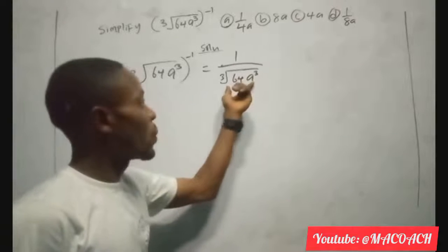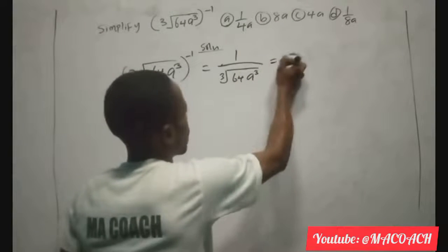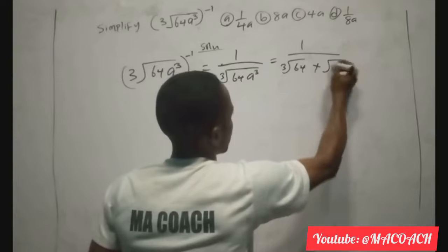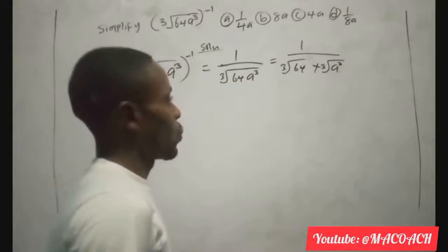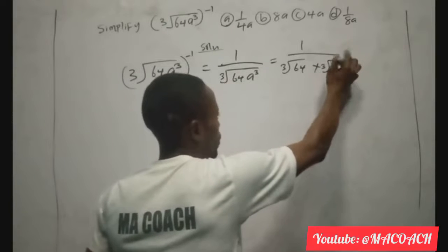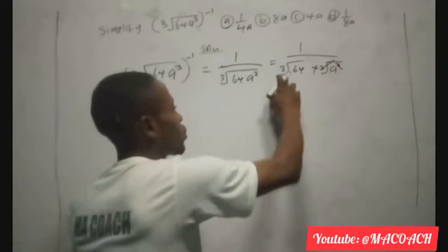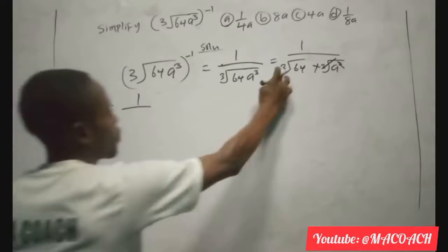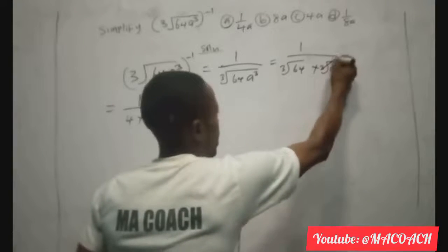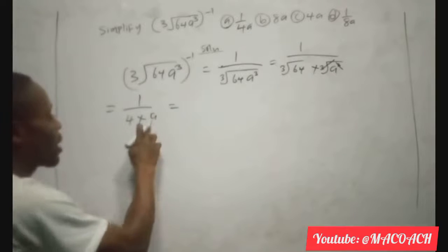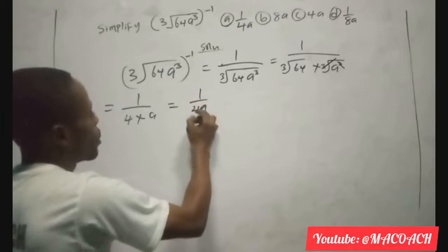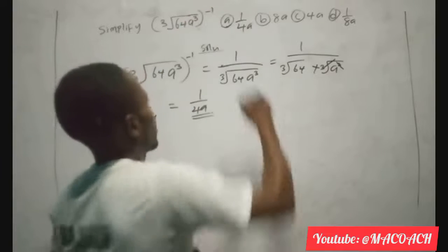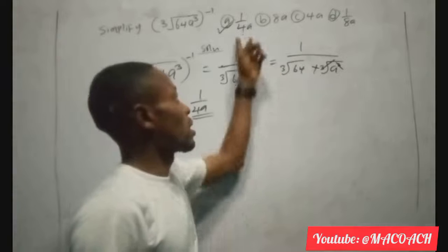Expanding what we have inside: 1 over the fourth root of 64, multiplied by the fourth root of A cubed. The fourth root and the power of 3 cancel, leaving just A. And the fourth root of 64 equals 4. So we have 1 over 4 multiplied by A, which gives 1 over 4A. Therefore, the answer to this question is 1 over 4A. Looking at our options, option A is the answer.